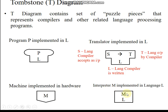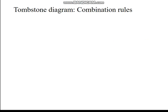A rectangle symbol represents the interpreter. The interpreter M is written in programming language L. The interpreter consists of a set of programs written in language L. We can combine these different symbols together to form other combinations.